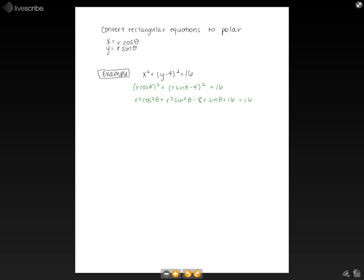So now we need to solve for r. So first start by subtracting 16 from both sides, which will just give you r squared cosine squared theta plus r squared sine squared theta minus 8r sine theta equal to 0.